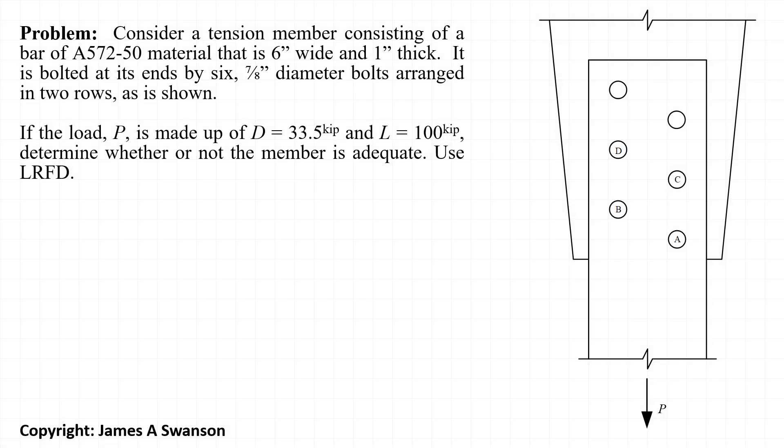In this example, we'll be evaluating the strength of a tension member made up of a 6-inch wide by 1-inch thick bar made out of A572 grade 50 material. The bar is connected to a gusset plate at its end by six 7/8-inch diameter bolts arranged in two rows that are staggered, as shown here. The load is made up of 33.5 kips dead load and 100 kips live load, and we are asked to determine whether or not the member is adequate using the LRFD philosophy.